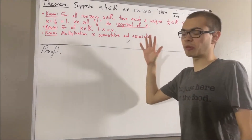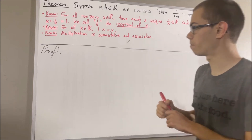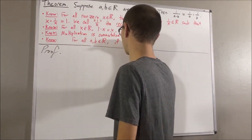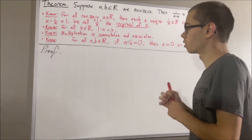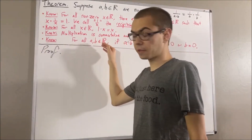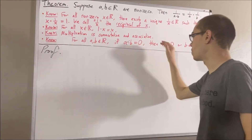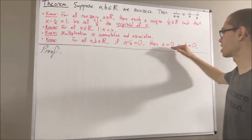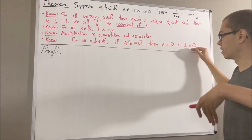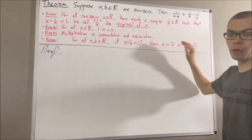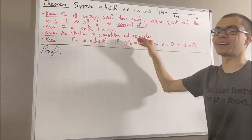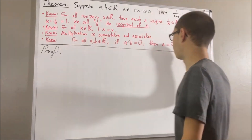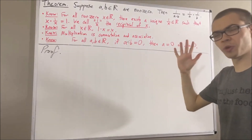Here's a result that can be deduced from the field properties of the real numbers: For all real numbers a and b, if a times b is equal to 0, then a is equal to 0 or b is equal to 0. Notice that the contrapositive of this statement says: if a is not equal to 0 and b is not equal to 0, then a times b is not equal to 0. In the book, this fact is referred to as theorem 2.1.3b.